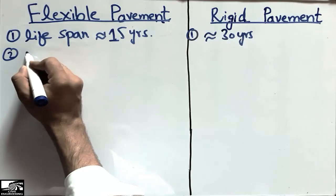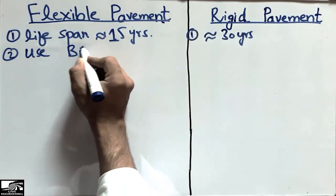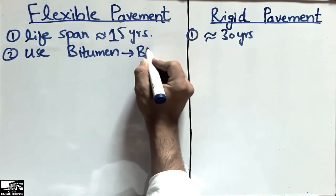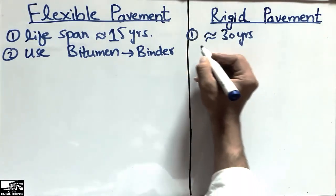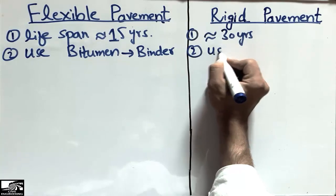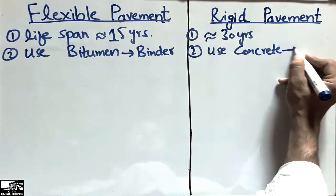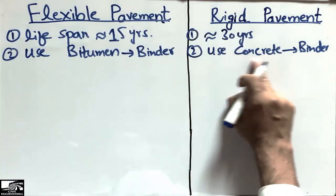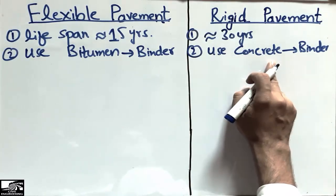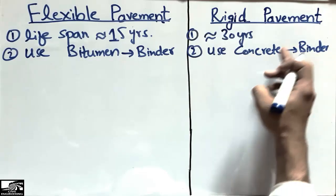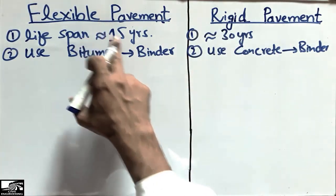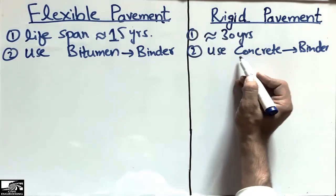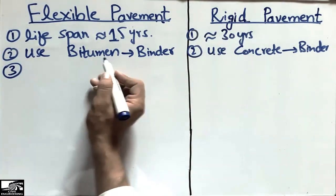The second difference is that bitumen is used as a binder material in the case of flexible pavement, while rigid pavement uses concrete as a binder material. In the case of rigid pavement, the last layer has a concrete surface, while in the case of flexible pavement, bitumen is used as the binder.